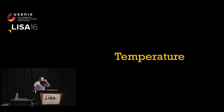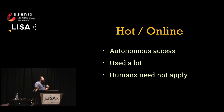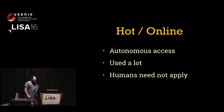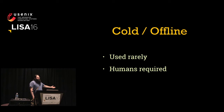Now we need to take their temperature. Hot or online secrets refer to things that are used during normal operations of an infrastructure, meaning that a server or service needs to be able to access the secret autonomously without human or operator intervention. For example, if a web server needs to get to a database and uses a password for that, we would classify that as an online or hot secret.